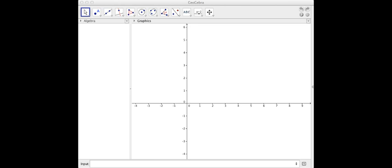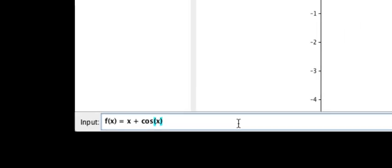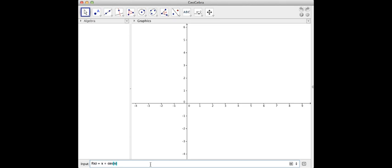Hello and welcome to this screencast on how to plot a point on the graph of a function in GeoGebra. Open up GeoGebra and enter in the function f of x equals x plus cosine x by typing this expression exactly as you see it, including the f of x equals part, into the input bar and then hit enter. This will produce a basic graph of the function.